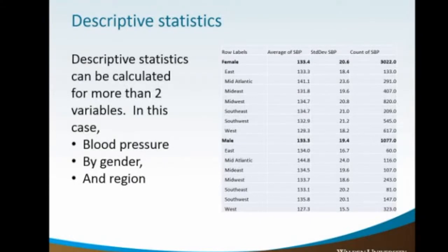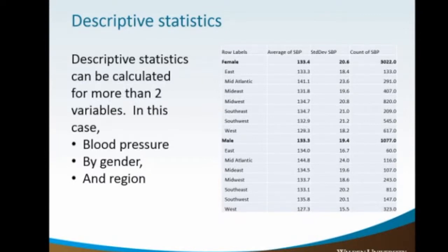In this example, we have blood pressures by gender, and you can also do it by region. In a pivot table, you can flip those around — do region by gender and all that. That's an example of where you can actually expand the types of descriptives that you're using.